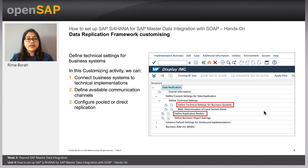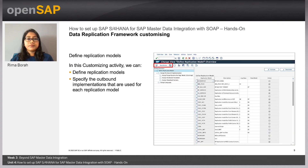The first step in DRF is defining technical settings for business system. In this customizing activity, we can connect business systems to technical implementations, define available communication channels, and configure pool or direct replication methods. The second step is defining the replication model. In this customizing activity, we can define the replication model along with specifying the outbound implementations to be used for each replication model.